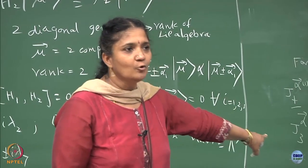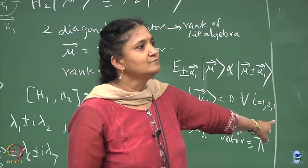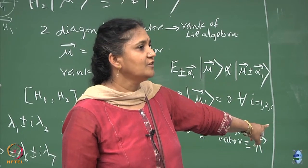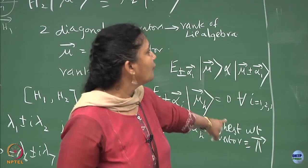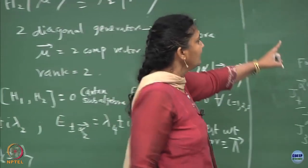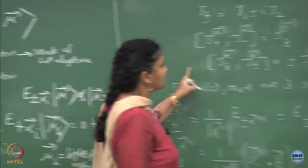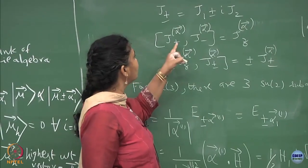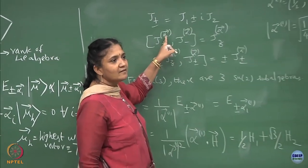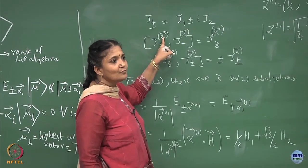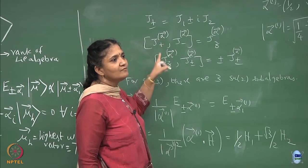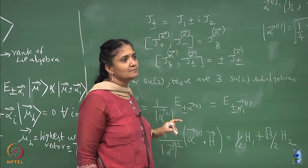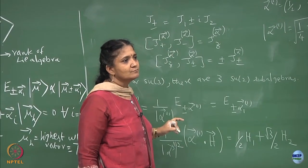Is this clear? Is the notation clear? This is the notation for the SU(2) subalgebras. There are 3 independent positive roots, so you will have 3 SU(2) subalgebras.